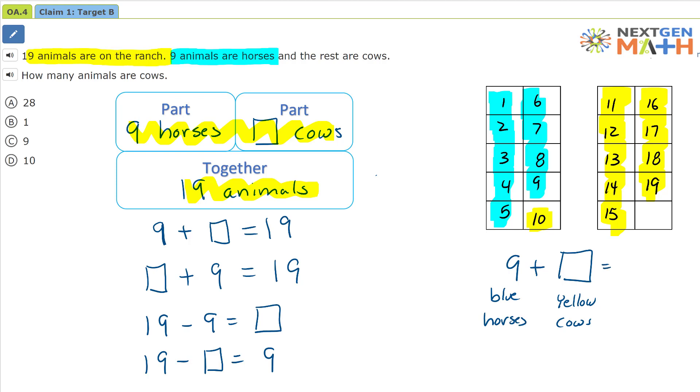So let's count the yellow squares. One, two, three, four, five, six, seven, eight, nine, ten.